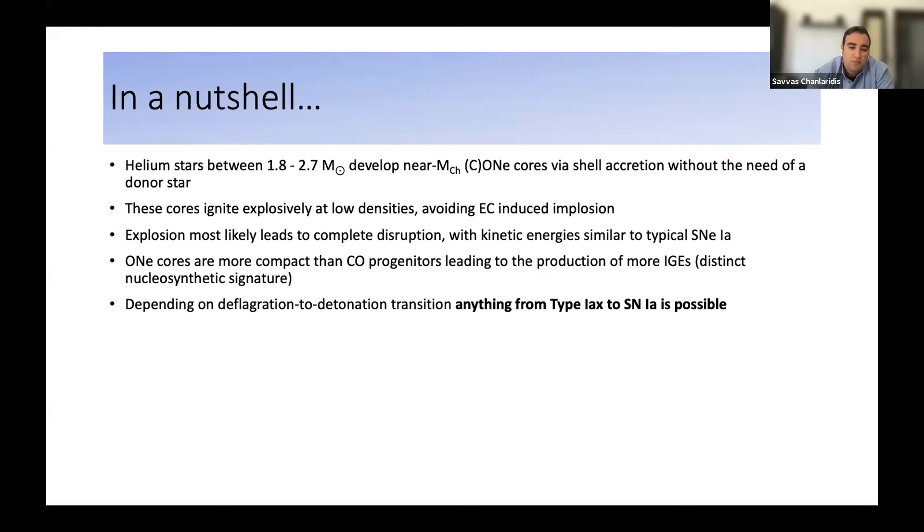So to sum things up, we showed that helium cores in a specific mass range can create either hybrid or oxygen-neon objects that reach the Chandrasekhar mass without the need of accretion from a donor star in a binary. And these cores can initiate oxygen burning at low densities due to some leftover carbon in their cores after they have lost their entire helium envelope. This most likely leads to the complete disruption of the star, avoiding an electron capture supernova and producing ejecta with kinetic energies similar to typical supernova Ia. And generally speaking, since these oxygen-neon cores are generally more compact objects than the carbon-oxygen progenitors supernova Ia that we all know and love, this could lead to the overproduction of iron group elements, giving this channel a distinct nucleosynthetic signature. And finally, depending on the transition time between the deflagration and detonation, we can expect anything from a subluminous type Iax supernova to a more typical supernova Ia.